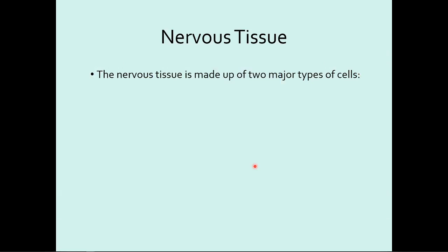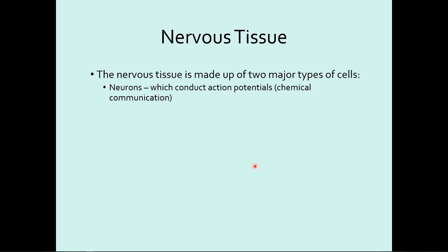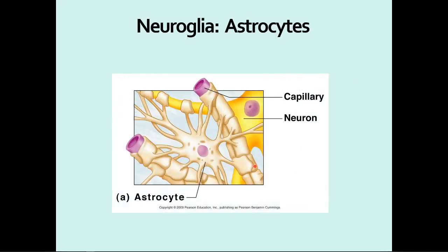Now we're going to dive into the tissues. Nervous tissue has two major camps of cells: neurons, whose job is to create electrical signals and send them throughout the body, and neuroglia cells — a group of six different cells that help protect and maintain those neurons so they can do their job. We have far more neuroglia cells than we do neurons within our body. We're going to look at the neuroglia first.